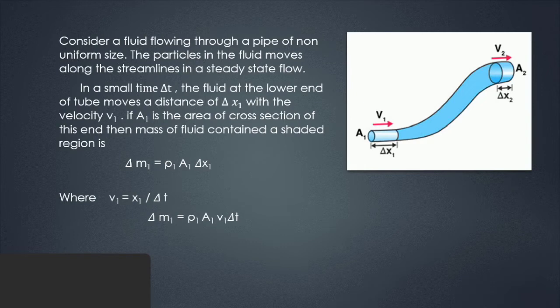Where velocity = Δx₁/Δt, so the above equation becomes Δm₁ = ρ₁A₁v₁Δt. Similarly, fluid moves through the upper end of the pipe with velocity v₂: Δm₂ = ρ₂A₂v₂Δt.